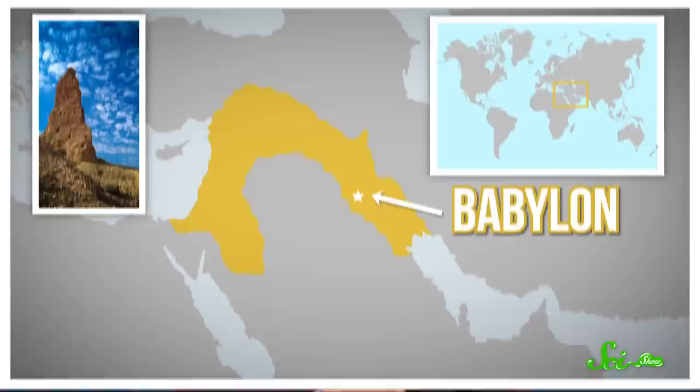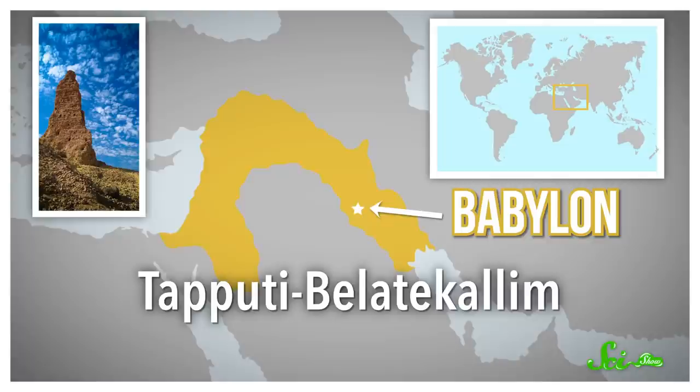The present-day discipline of chemistry dates back to the 17th or 18th century, but the methods chemists use are actually a lot older than that. And one of the earliest mentions of chemical techniques comes from ancient Babylon, in a tablet written about a woman named Tiputi Beleticallam, making her possibly history's first recorded chemist.